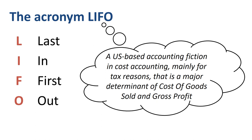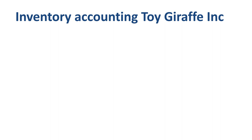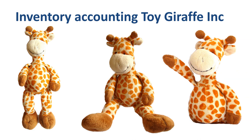The comment 'mainly for tax reasons' will become clear when seeing the numerical results of the example we go through. Let's work through an example of LIFO. We will do the inventory accounting for a hypothetical company called Toy Giraffe Inc. As the name suggests, this is a company buying and selling toy giraffes.